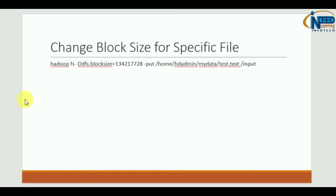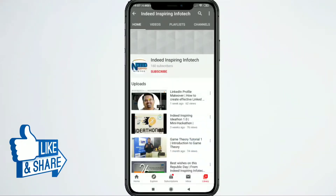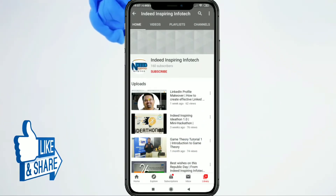If you want to customize the block size for one specific file, you can specify the block size at the time of loading that file. You can use the hadoop fs or hdfs dfs command, passing the parameter -Ddfs.block.size equal to your desired block size, followed by the put command for that particular file.